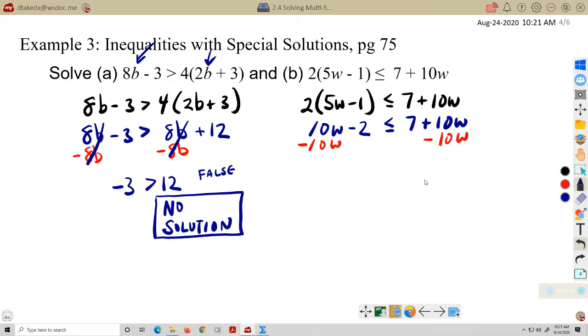Look, it cancels out equally on both sides. I think that's always really the point when we have these special solutions here. What does that leave me? It leaves me negative 2 is less than or equal to 7. This is a true statement. Negative 2 is indeed less than positive 7. So the solution here is all real numbers.